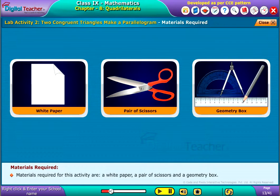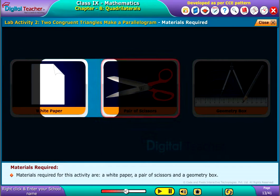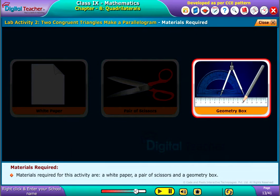Materials required for this activity are a white paper, a pair of scissors, and a geometry box.